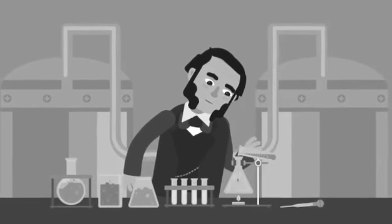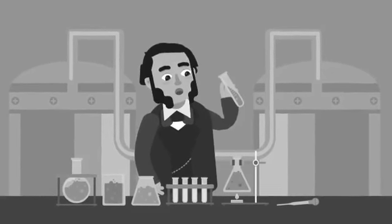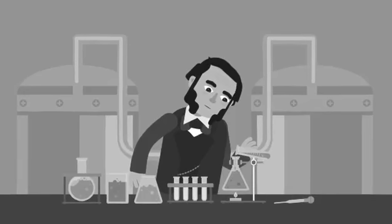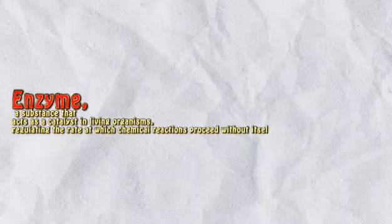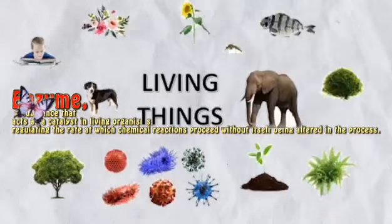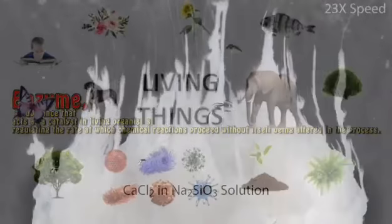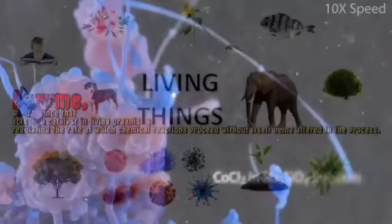In 1833, a French chemist was the first to discover the vital force that drove these reactions and named it enzyme. And now, enzyme: a substance that acts as a catalyst in living organisms, regulating the rate at which chemical reactions proceed without itself being altered in the process.